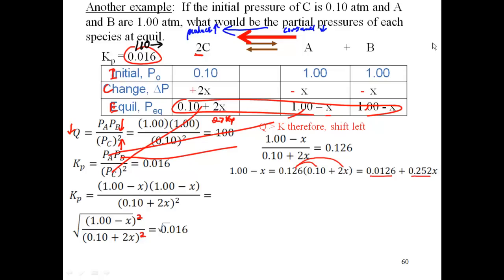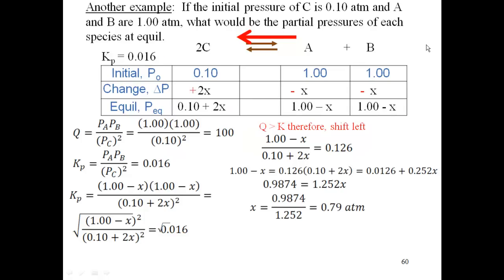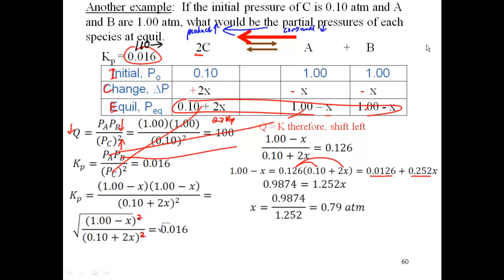Next I want to combine x's on one side and numeric numbers on the other side, so I will add 1x to both sides and subtract 0.0126 on both sides, which gets me 0.9874 is equal to 1.252x. I want just x, so I divide through by that coefficient, which gets me 0.9874 divided by 1.252, which gets me 0.79.